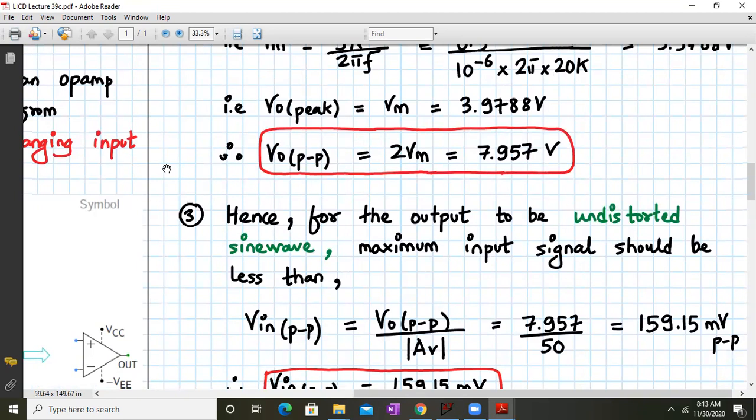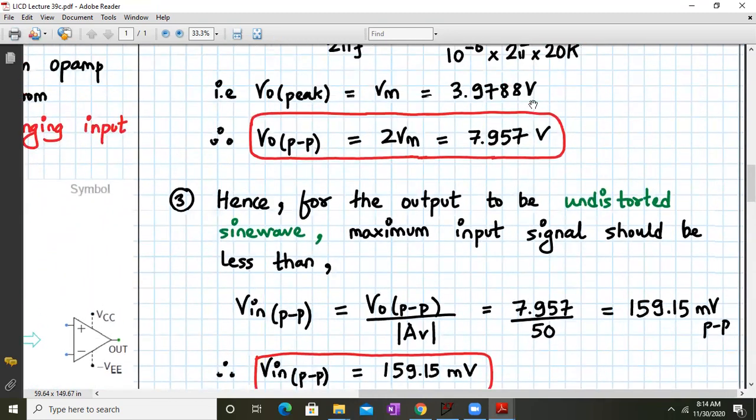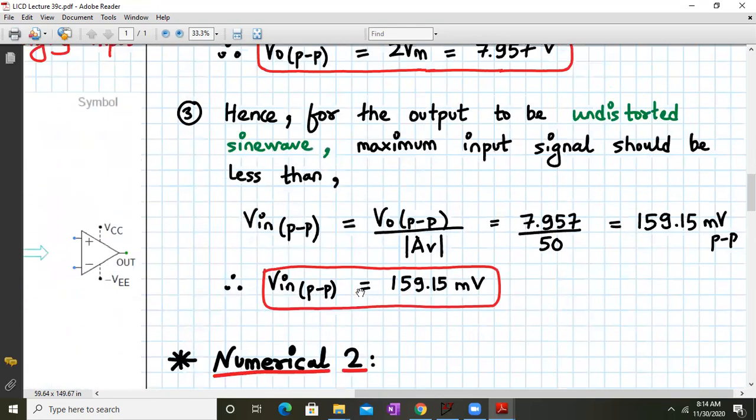Now this Vm is actually VO peak. So VO peak to peak will be twice this number, which is close to 7.957 volts. Okay. Now for the output to be undistorted, the maximum input signal should be less than. Okay. So V in peak to peak would be VO peak to peak upon gain, the magnitude of gain, which is around 50. So we divide 7.957 divided by 50. You will surely get a number close to 159.15 millivolt.